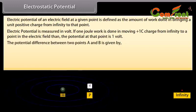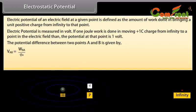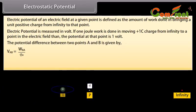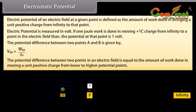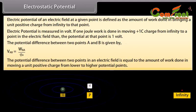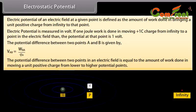The potential difference between two points A and B is given by VAB equals WBA upon Q0. The potential difference between two points in an electric field is equal to the amount of work done in moving a unit positive charge from lower to higher potential point.